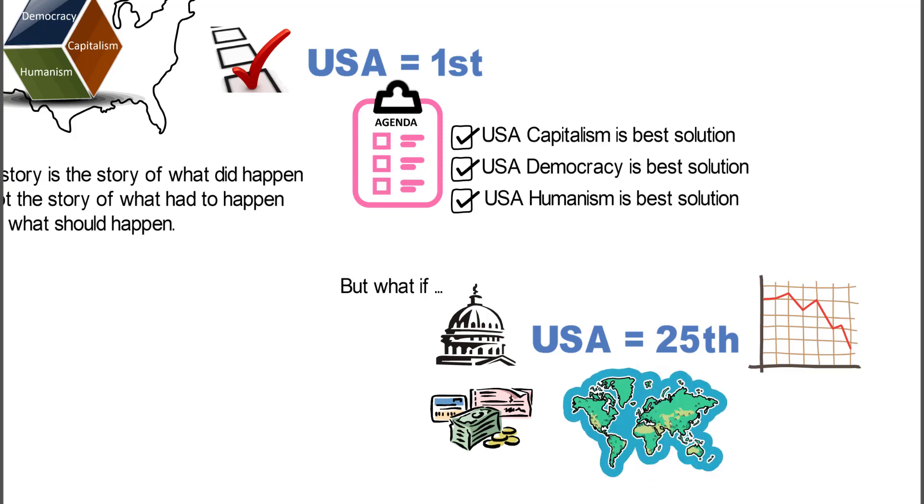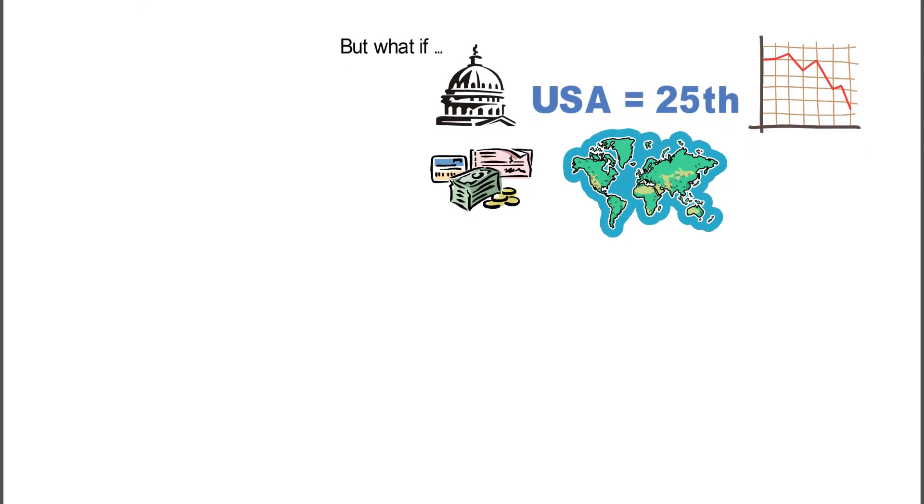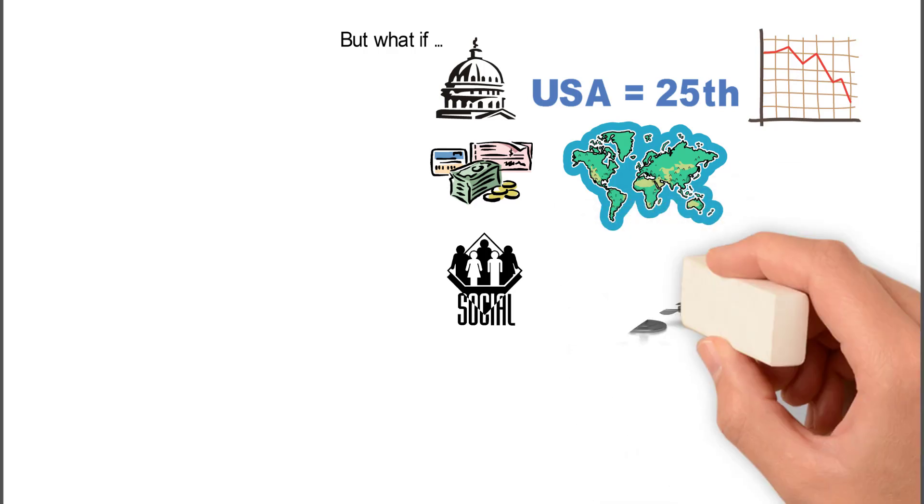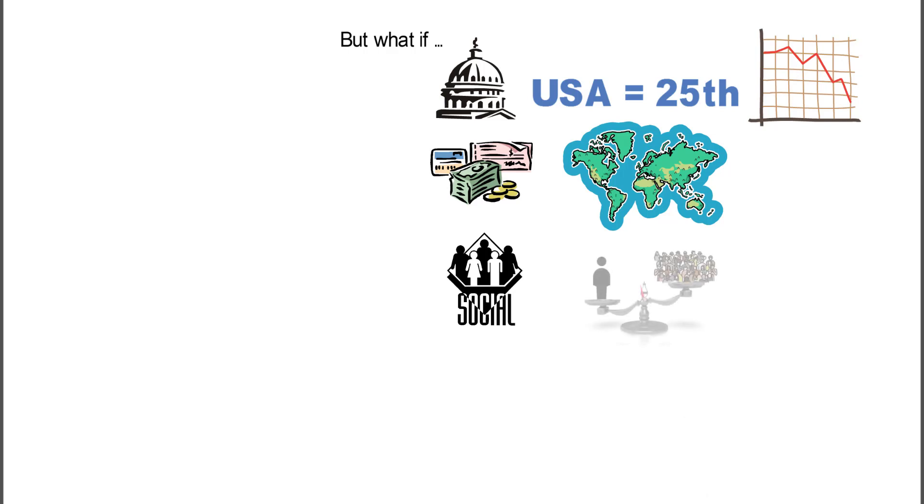Economics—the USA capitalism—I mean, capitalism has gone from being a national system, a USA system, to being global. So capitalistic businesses are no longer dependent upon even being in the United States. From a social perspective, the emphasis on the individual has really moved to emphasis on the group. So all three